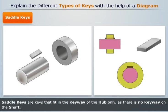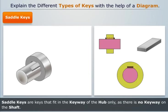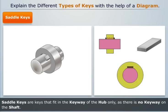Saddle keys are keys that fit in the keyway of the hub only. As there is no keyway on the shaft, power transmission in the saddle key takes place due to frictional forces.